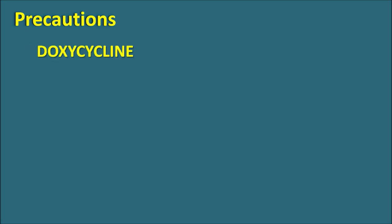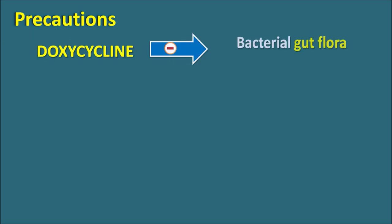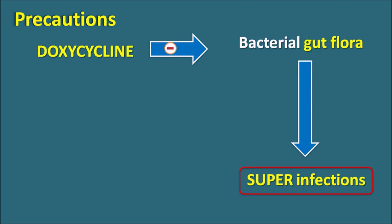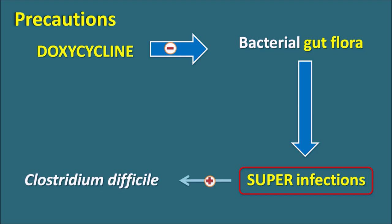One important precaution with doxycycline is that, being a broad spectrum antibiotic, it can inhibit the bacterial gut flora within the host. This gut flora has a protective role against pathological microorganisms. When gut flora is inhibited, it results in the development of superinfections. One such superinfection is Clostridium difficile infection, which develops within the colon and may result in diarrhea in patients.